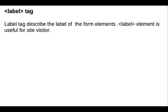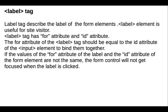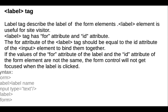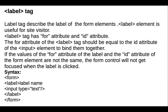The label tag describes the label of form elements and is useful for site visitors. The label tag has two key attributes: 'for' and 'id'. The 'for' attribute of the label tag should be equal to the 'id' attribute of the input element to bind them together. If they are not the same, the form control will not get focused when the label is clicked.